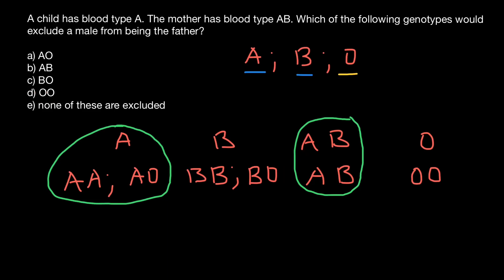If the father has genotype OO — blood group O — mother can give allele A to the child, and the father can only give allele O, meaning the child would be AO and belong to blood group A. So as you can see, we cannot exclude any of these genotypes, and the answer is E — the father can belong to any genotype or blood group listed.